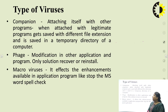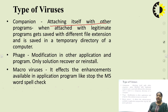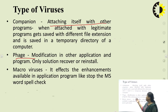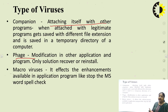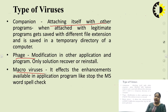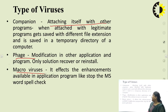Next is the companion virus, which attaches itself to other programs. When attached to legitimate programs, it gets saved with a different file extension and is saved in a temporary directory. Next is the phase virus, which modifies other applications and programs; the only solution is to recover or reinstall the affected program. Finally, macro viruses affect the enhancements available in application programs, such as stopping the MS Word spellcheck and other built-in enhancements.